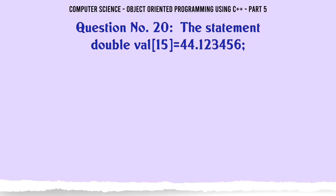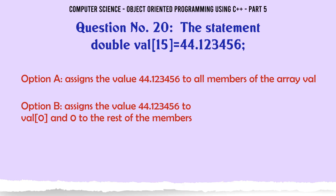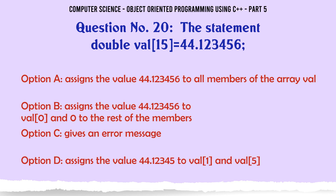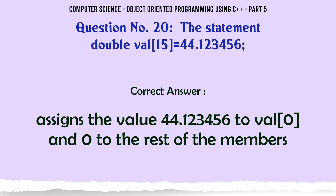The statement double wall[15] = {44.123456}. A. Assigns the value 44.123456 to all members of the array wall. B. Assigns the value 44.123456 to wall[0] and 0 to the rest of the members. C. Gives an error message. D. Assigns the value 44.123456 to wall[1] and wall[5]. The correct answer is: Assigns the value 44.123456 to wall[0] and 0 to the rest of the members.